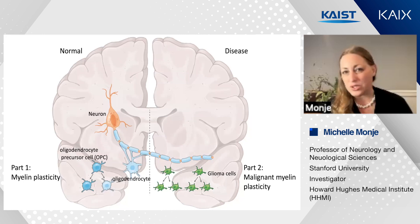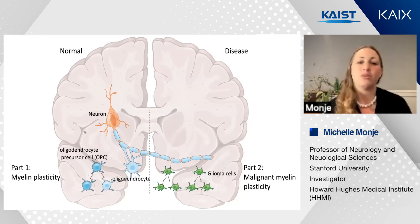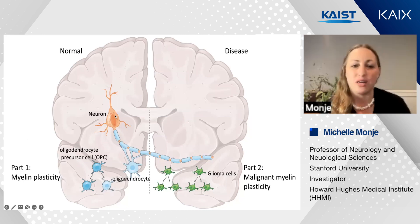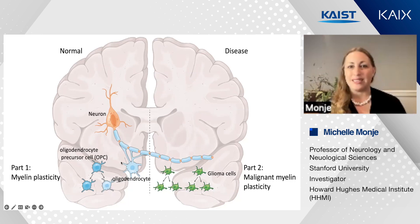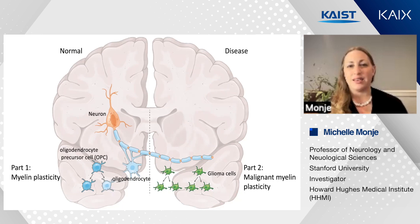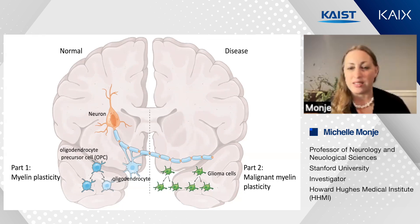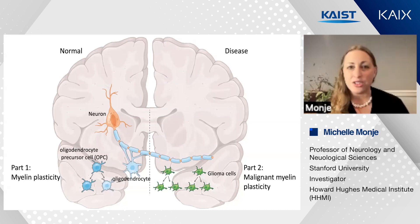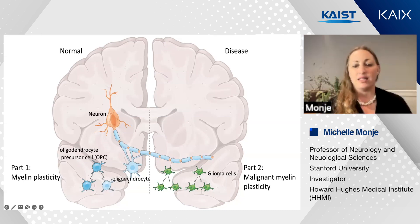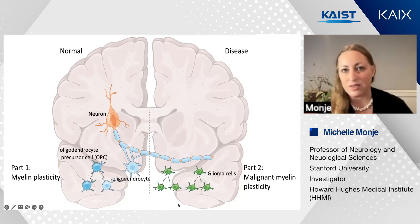I want to tell you one story today in two parts about the way in which neurons interact with the glial cells that form the myelin sheath, and how we're beginning to understand that this is an adaptive and experience-dependent process that tunes neural circuit function. And then how these powerful interactions between neurons and oligodendroglial cells are subverted in the context of glial malignancies.